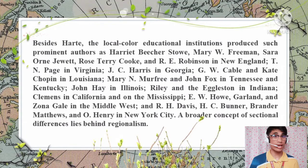Besides Harte, the local color movement produced such prominent authors as Harriet Beecher Stowe, Mary W. Freeman, Sarah Orne Jewett, Rose Terry Cooke, and R.E. Robinson in New England; T.N. Page in Virginia; J.C. Harris in Georgia; G.W. Cable and Kate Chopin in Louisiana; Mary Ann Murfree and John Fox in Tennessee and Kentucky; John Hay in Illinois; Riley and the Egglestons in Indiana; Clemens in California and on the Mississippi; E.W. Howe, Garland, and Zona Gale in the Middle West; and R.H. Davis, H.C. Bunner, Brander Matthews, and O. Henry in New York City.